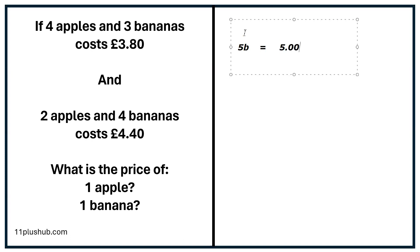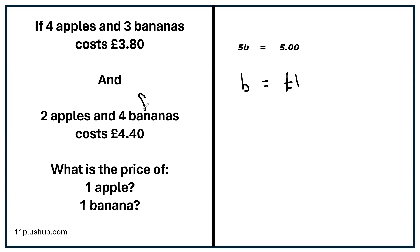Now this says 5 bananas equal £5. And if five bananas equal £5, that means one banana must equal £1. Now if one banana equals £1, look at this question: two apples and four bananas cost £4.40. If one banana is £1, four bananas must be £4. And altogether two apples and four bananas cost £4.40, so two apples must cost 40 pence. And therefore one apple must cost 20 pence. So: apple = 20 pence, banana = £1.